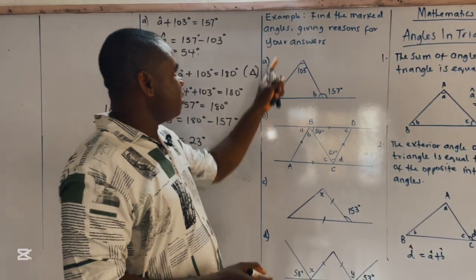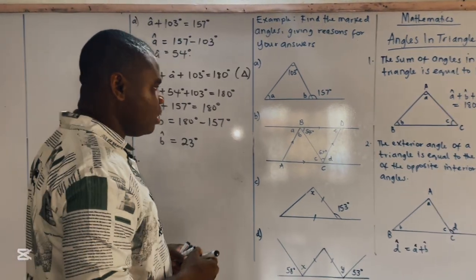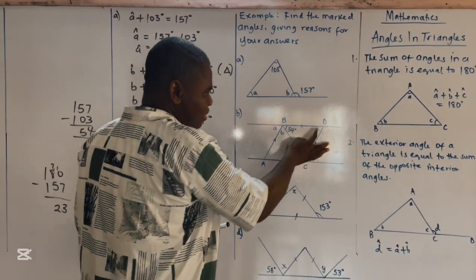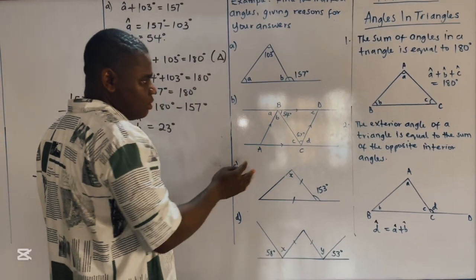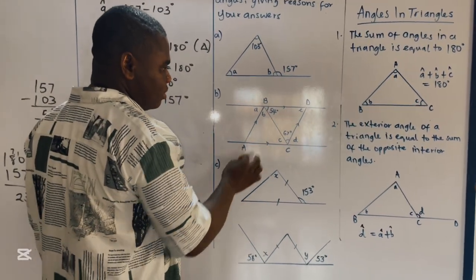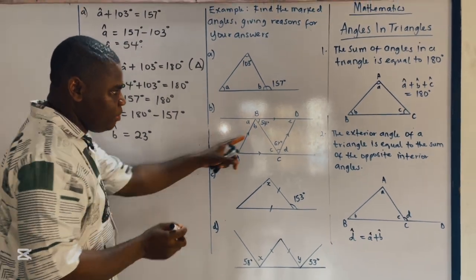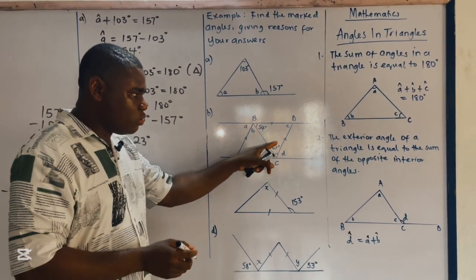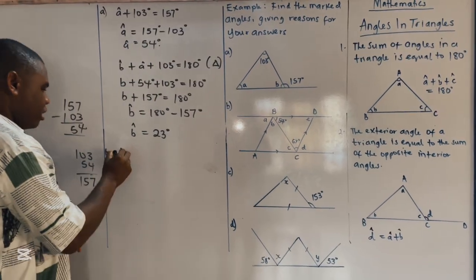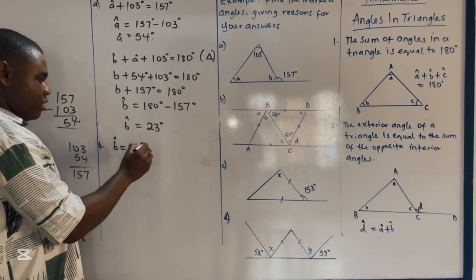For the next example, we have to find the marked angles. If you look at this figure, you notice that a Z sign has been formed — that is an alternate angles situation. It therefore means that B is alternate to 67 degrees, so angle B is equal to 67 degrees.